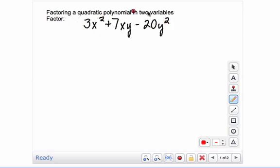So the method I like to use is to multiply this first and last term value, the 3 times negative 20 to get negative 60. You're looking for two numbers that multiply to negative 60 but add to your middle term 7.